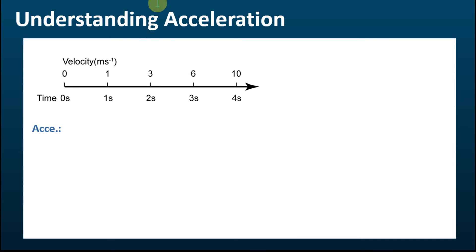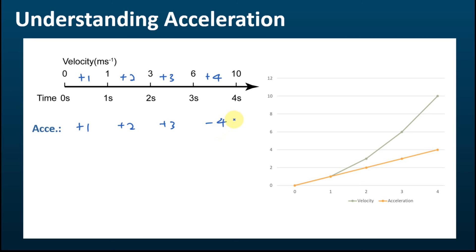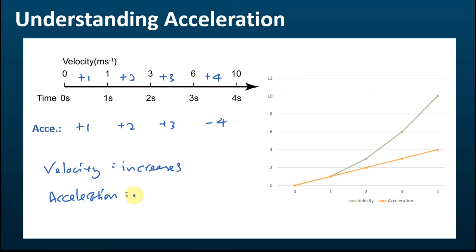In this next case, the velocity increases from zero to four seconds, but by increasing amounts: it increases by 1 in the first second, then by 2, then 3, then 4. Therefore the acceleration is positive 1, then positive 2, positive 3, and positive 4. So in this case both velocity increases and acceleration also increases.